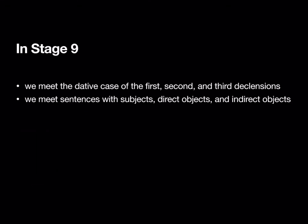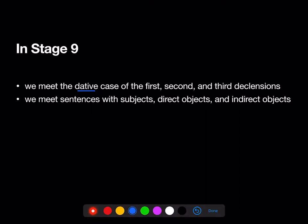Hi, welcome to the Stage 9 review. In Stage 9, we meet the dative case of the first, second, and third declensions, and we meet sentences that now have subjects in the nominative case, direct objects in the accusative case, and indirect objects in the dative case.